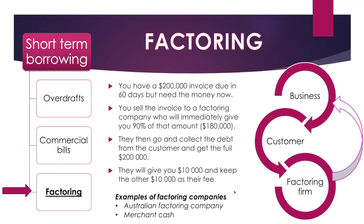That collection may happen at the end of the 60-day period. The factoring company then gives you $10,000 of the extra amount collected and keeps the other $10,000 as their fee. In the end, you as a company receive $190,000 in total — $180,000 instantaneously and $10,000 at the end of the 60 days — while the factoring company earns $10,000 profit as their fee. There are factoring companies in Australia that offer this service. The next video covers long-term borrowing options.